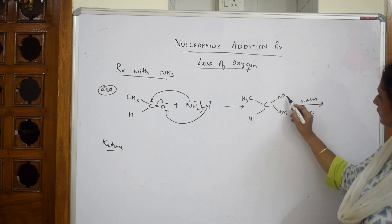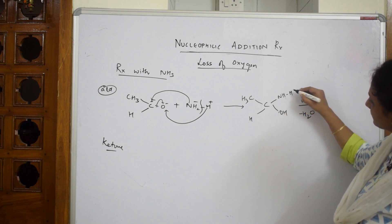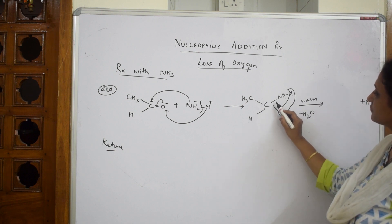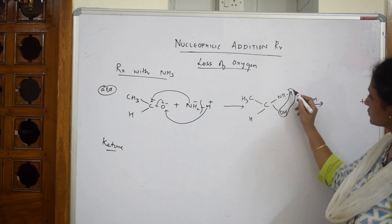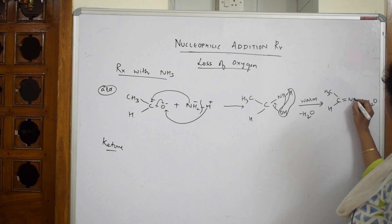From where is the water lost? H from here and OH from here is lost. This bond is going to shift to this position. The bond shifts like this. What do I get? C with CH3, H and your double bond NH.